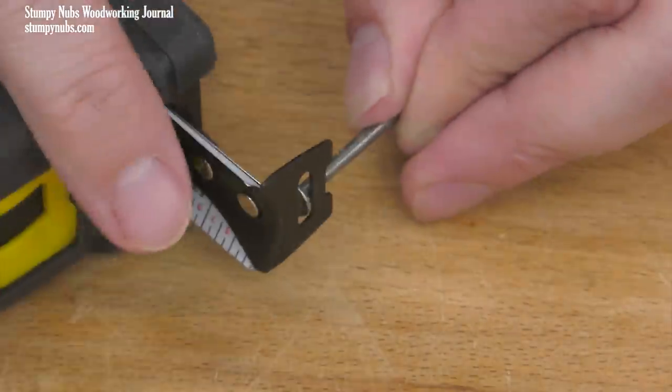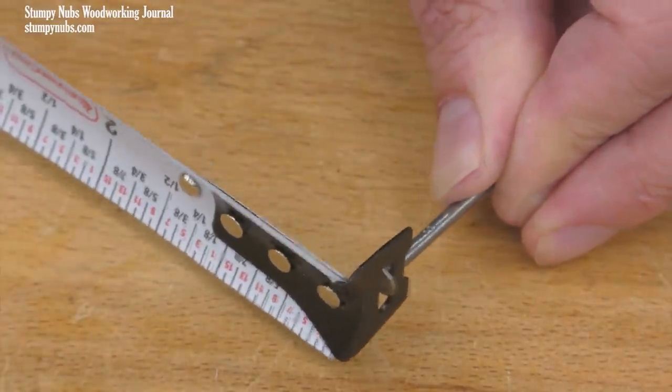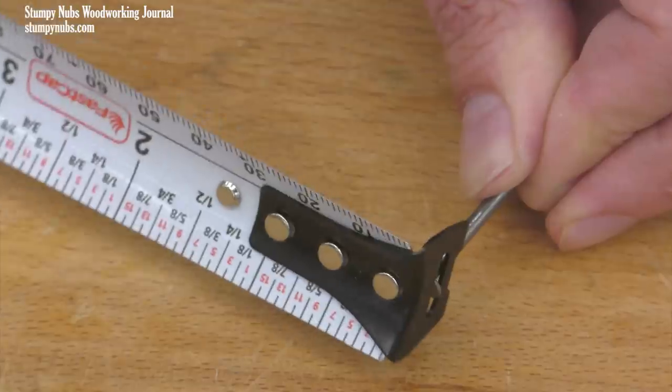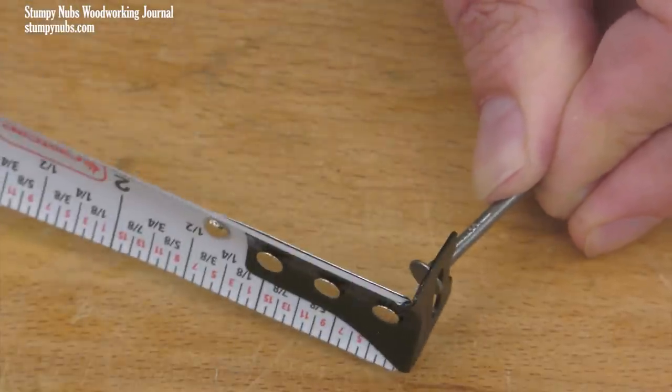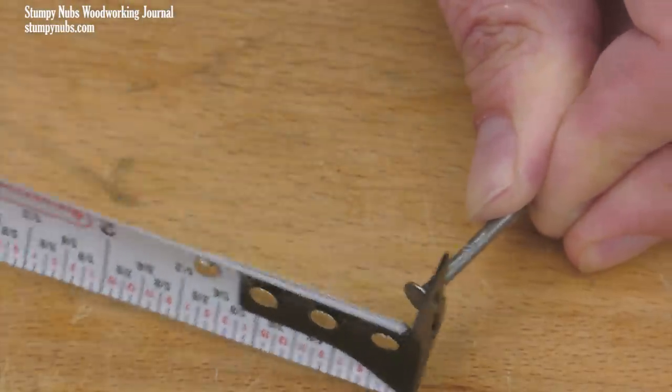You'll usually find a slot in the tabbed end of most tapes. This makes it possible to hook onto a nail, which will hold it more securely than simply hooking onto the edge of something. I find this most useful when taking very long measurements, such as the side of a building.